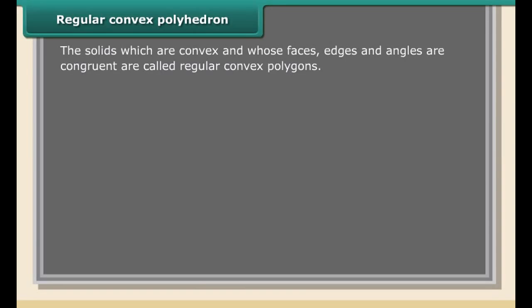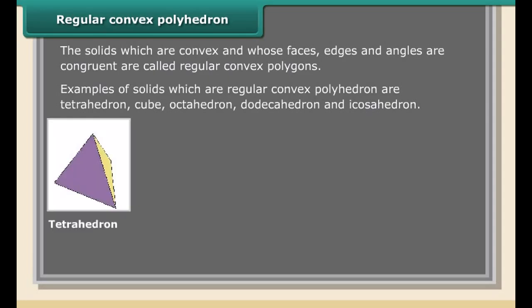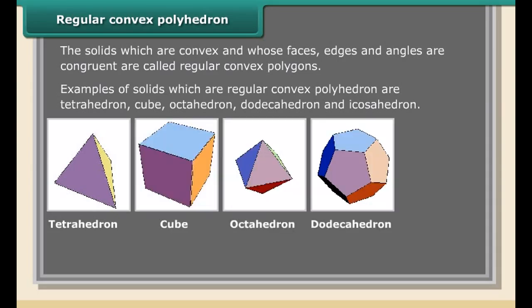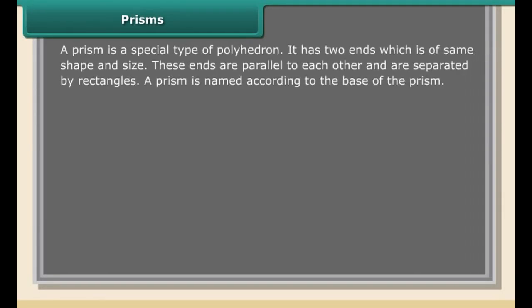Cuboid and octahedron are examples of polyhedrons. Non-polyhedrons are solids which have curved surfaces and are not polyhedrons — cylinder, cone, and sphere. Convex polyhedron: if the line segment joining any two points on the surface, including faces, vertices, and edges of the polyhedron, lies on the surface and does not intersect itself, it is called a convex polyhedron.